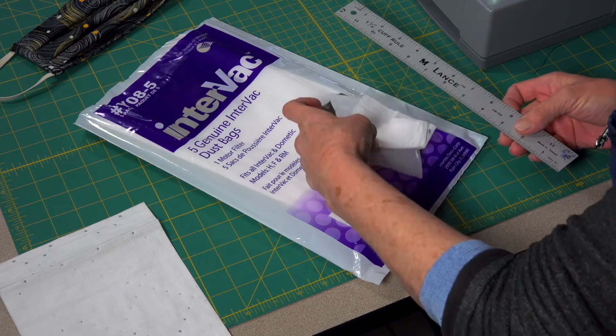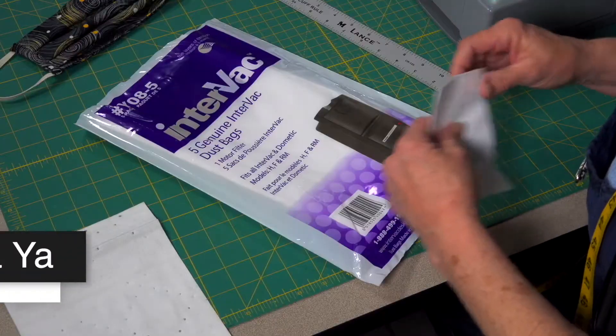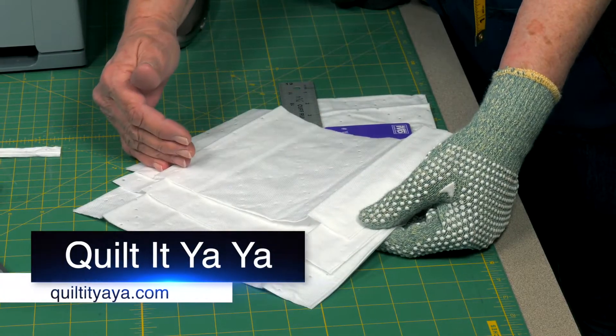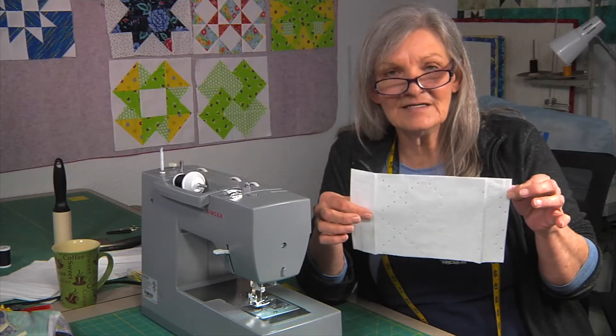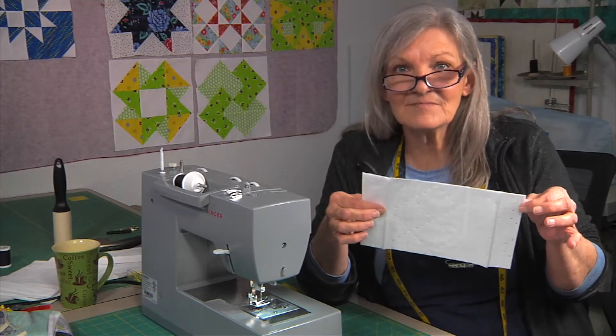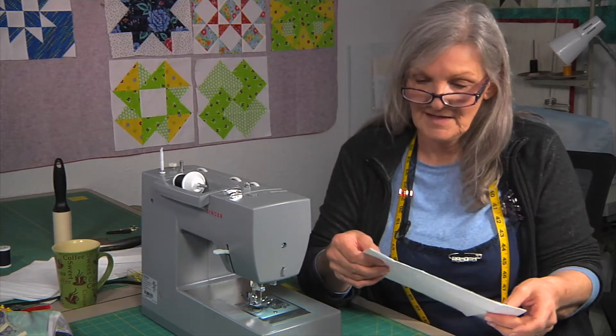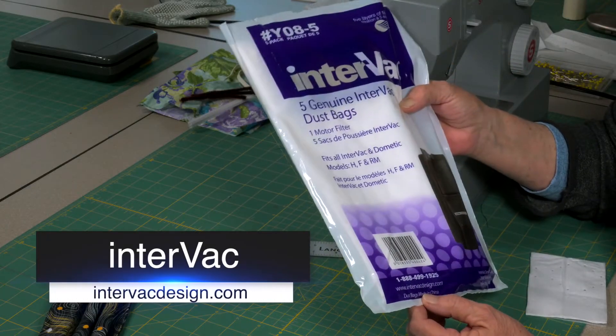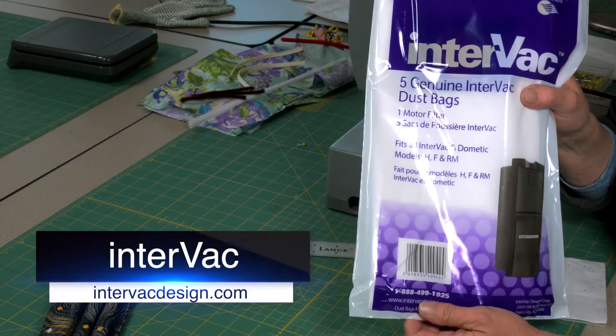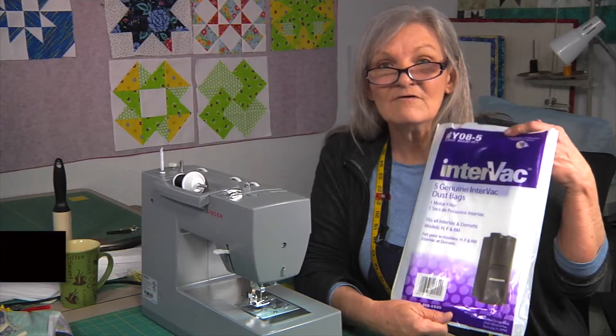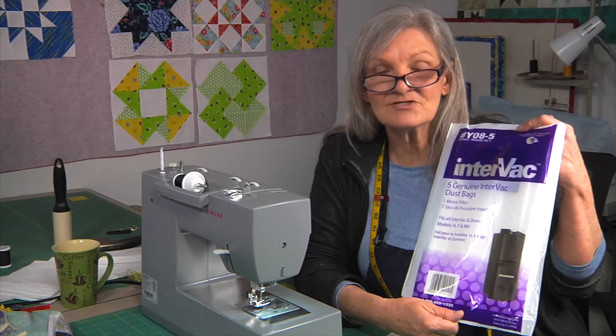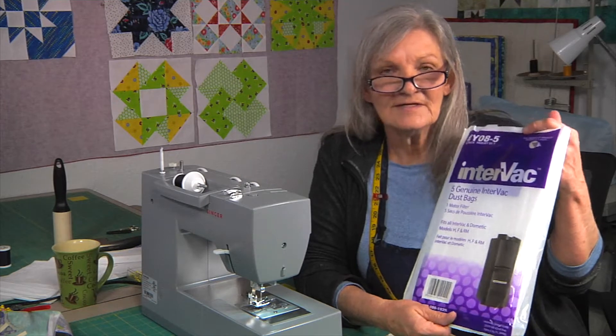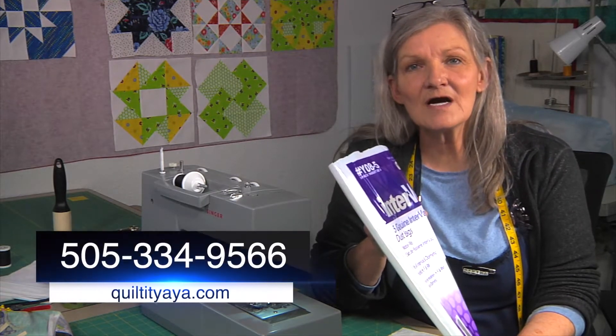The nice part about this particular filter is it is hand washable. You can buy these filters from us at Quilt It Ya Ya. You can buy them pre-cut, 6x10 or 6x7 depending on the size of the mask. They are $2 each. Or you can buy them from interbackdesign.com for $15.99 each. Our number is 505-334-9566.